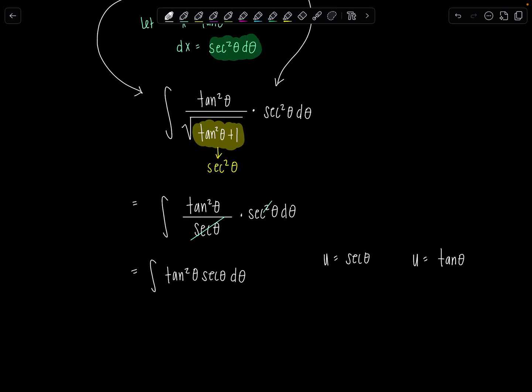So you have two options. Either you would let u be secant theta or you would let u be tangent theta. So if u is secant theta, du would be secant theta, tan theta, d theta. Do I have that? No, because if this is u, I would need another secant theta for my du and I don't have that. So this guy's not going to work. And then maybe you're thinking, u could be tan theta, but then du would be secant squared theta, d theta. I don't have that either. If u is tan theta, nope, that's not working.